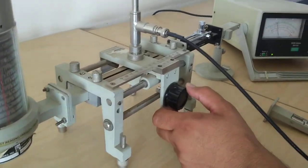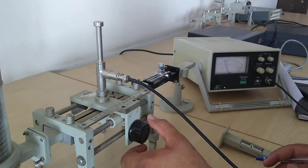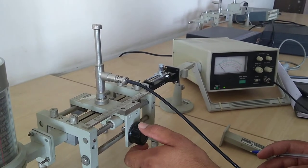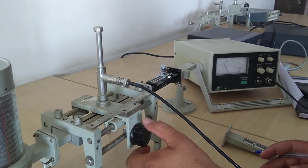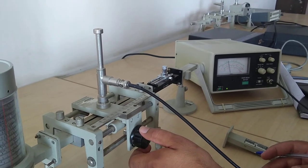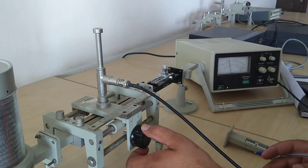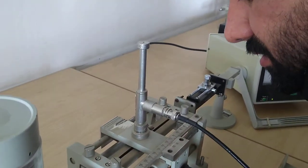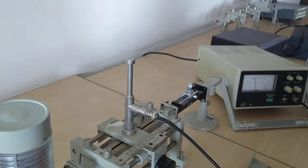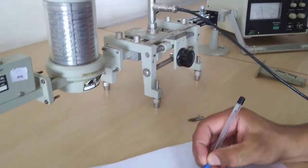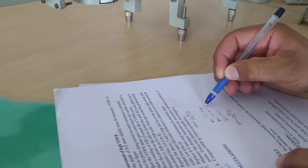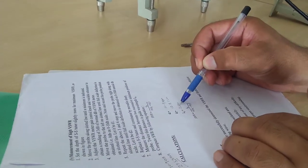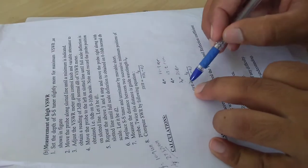Then again I continuously rotate my slotted section to the left side, so again it goes for minima. Then again I observe one maxima, this is the second maxima. Its reading is approximately 12.8 cm.